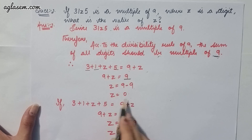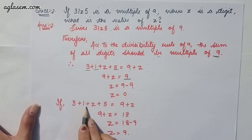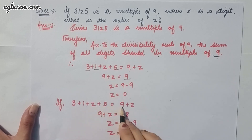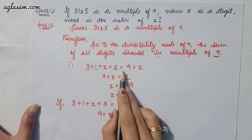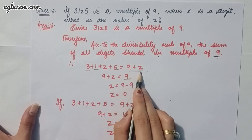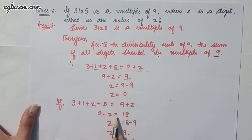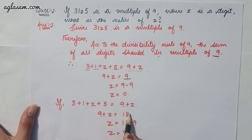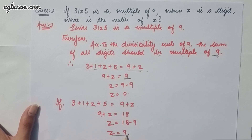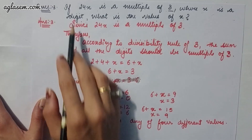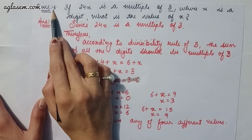In a different case, if 9 + z = 18, then z = 9. So z can be either 0 or 9. Moving to the third question.